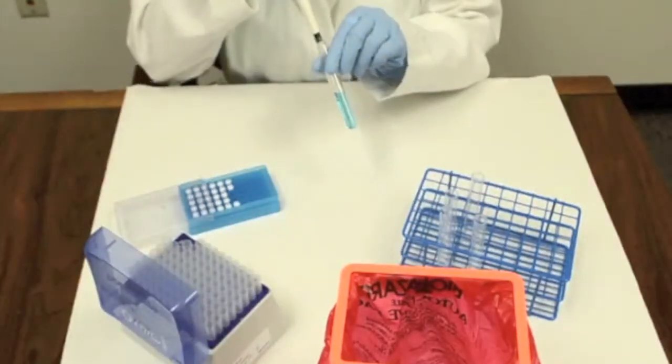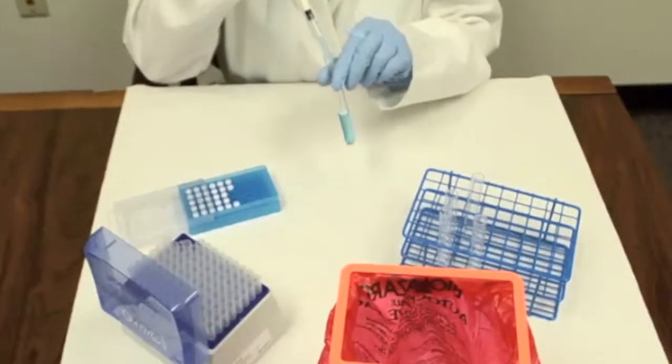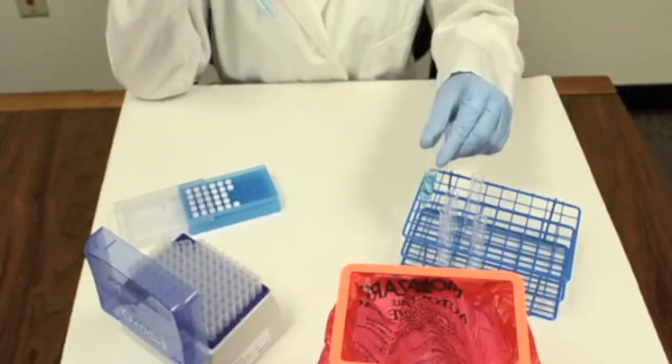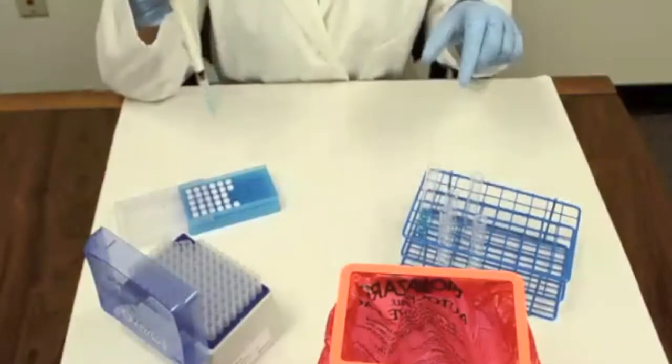Using a P1000 pipette, dial in the required volume, attach a P1000 pipette tip, then aspirate the volume of cells.